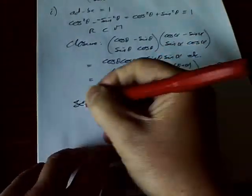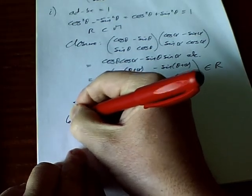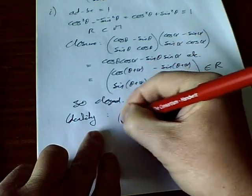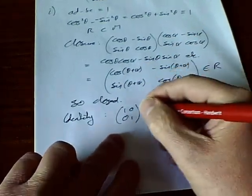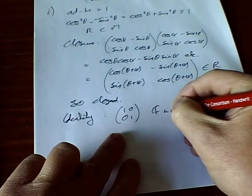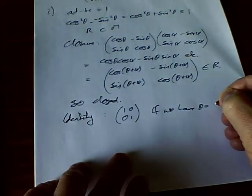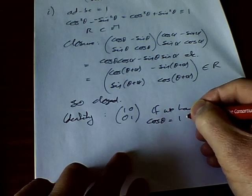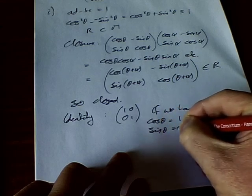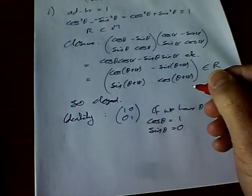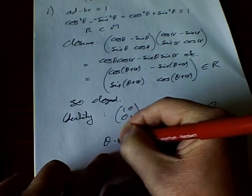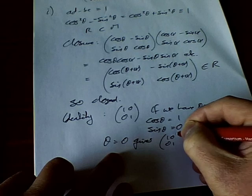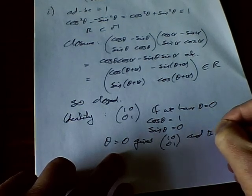Now for the identity matrix: we need the matrix 1, 0, 0, 1. Setting θ = 0 gives cos θ = 1 and sin θ = 0, so θ = 0 gives the matrix 1, 0, 0, 1. There is an identity element in R.